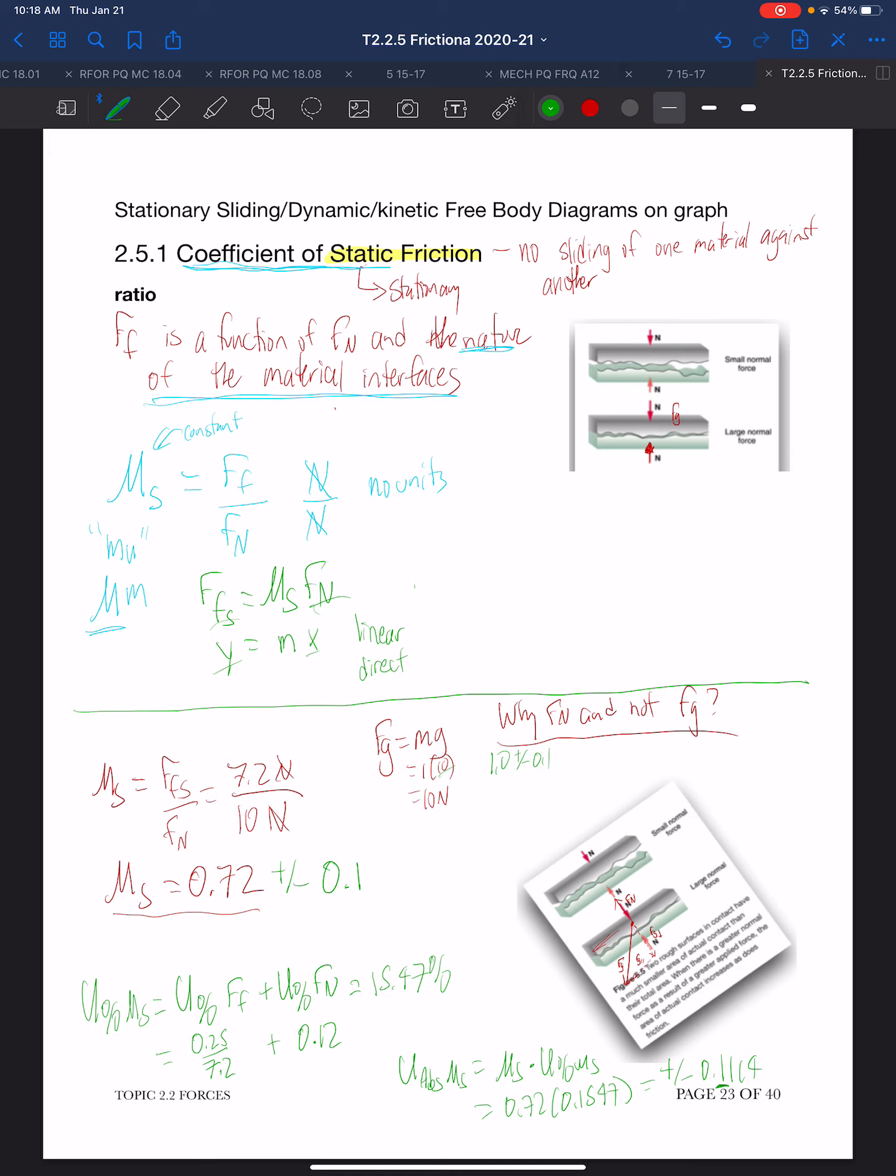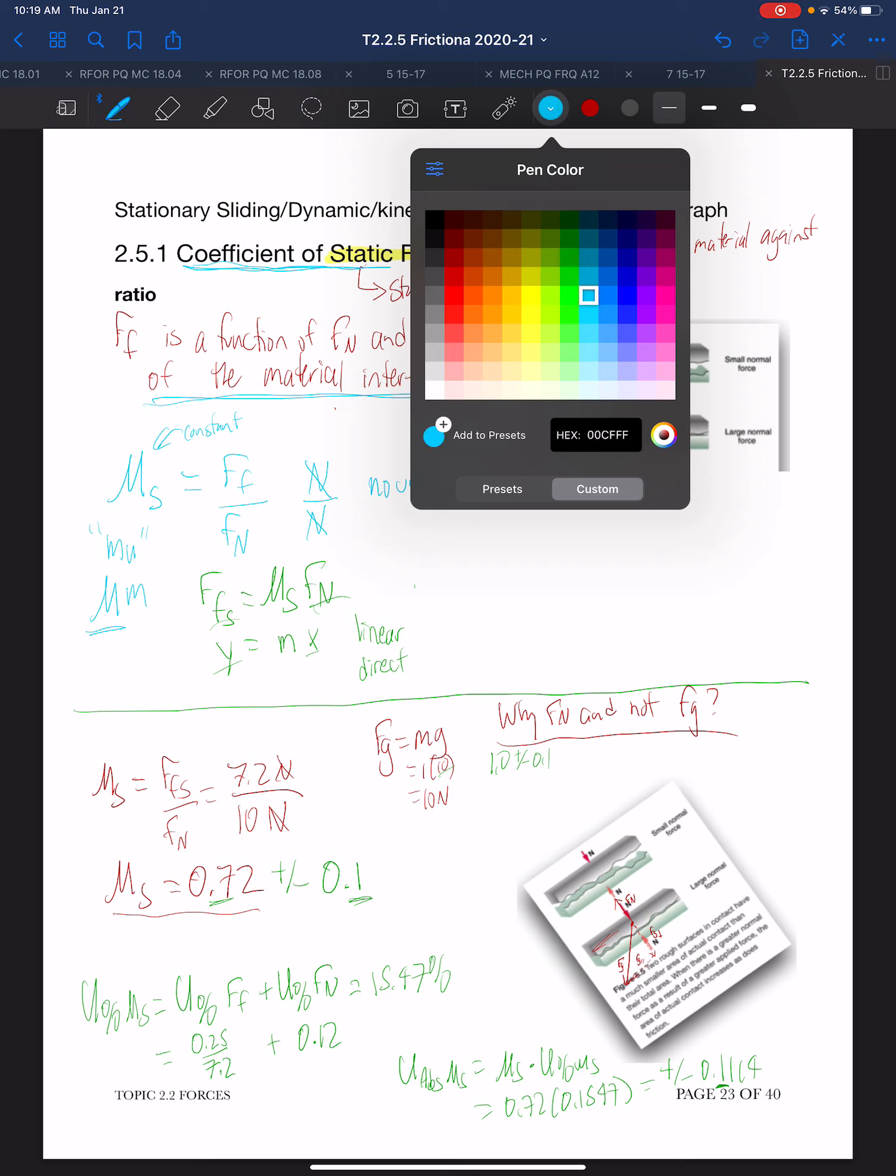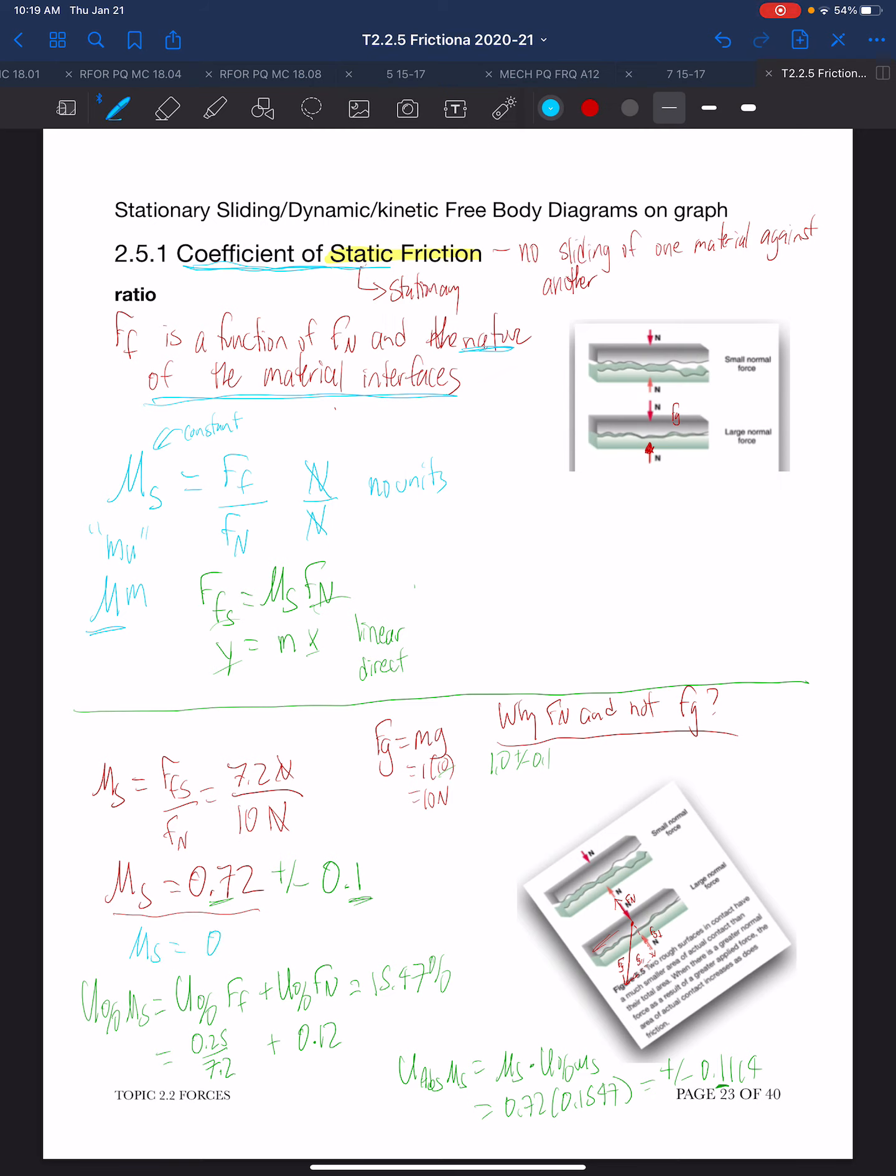And since this is to the 10th place, this number can only be to the 10th place. So when we report our final value, we have mu s is 0.7 plus or minus 0.1. And so that is our coefficient of static friction that we can determine experimentally.